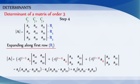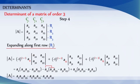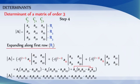Therefore, the final answer of determinant of A when expanded along the first row R1 is: a11·a22·a33 minus a11·a32·a23 minus a12·a21·a33 plus a12·a31·a23 plus a13·a21·a32 minus a13·a31·a22.